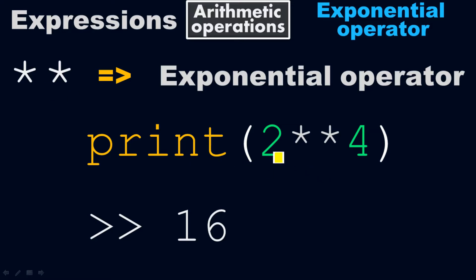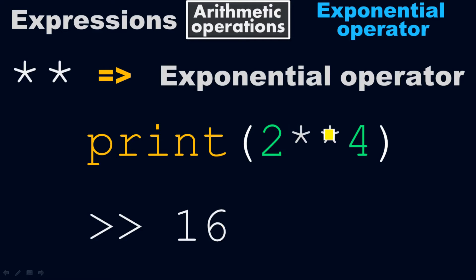So print(2**4) means that you take the power four for the two. When you take the power four for the two, it equals 16. Two to the four means multiply two four times: two times two times two times two — two to four, four to eight, eight to 16. In the final answer, you will get 16 when you run the program.